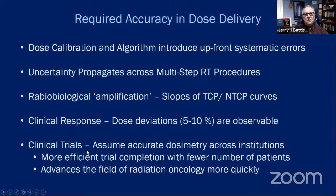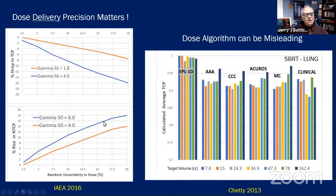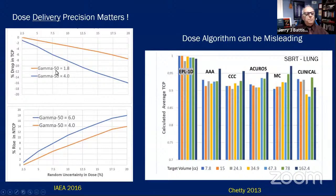Accuracy is also very important for clinical trials. In multi-center trials it is assumed that dosimetry will be correct and consistent — that makes for a more efficient trial completing with fewer patients. This interesting plot shows the loss of tumor control as uncertainty goes up, with standard deviations of five percent and seven and a half percent. It does not take long to lose several percent of effect in tumor control or to gain normal tissue complications.